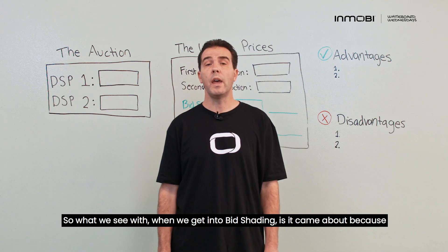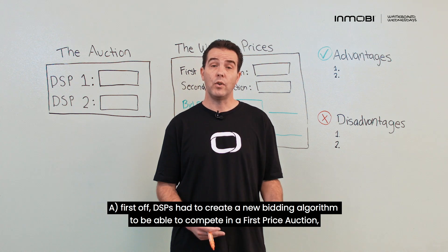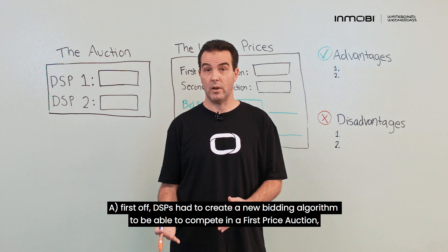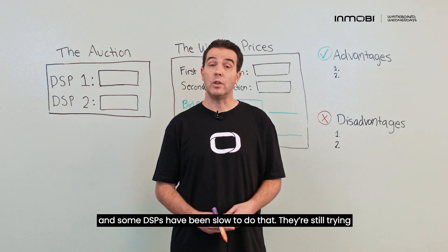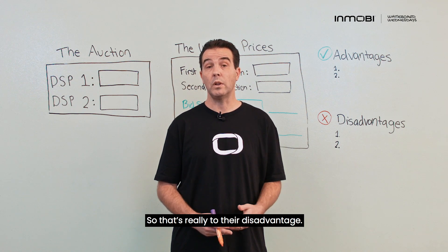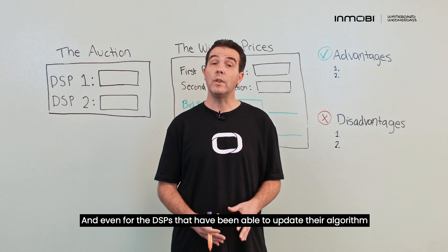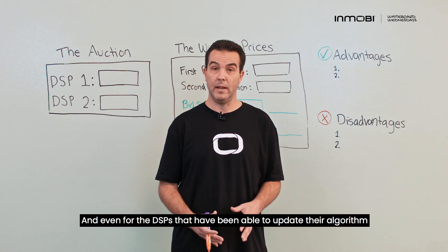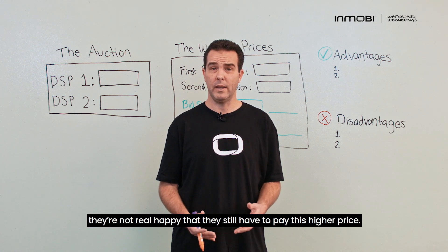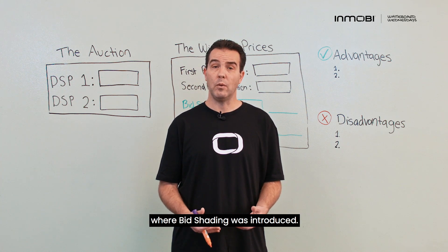Bid shading came about because, first off, DSPs had to create a new bidding algorithm to compete in a first price auction, and some DSPs have been slow to do that. They're still trying to use a second price bidding algorithm in a first price auction, which is really to their disadvantage — they end up paying higher than they would have to. Even for DSPs that have updated to a first price bidding algorithm, they're not happy that they still have to pay this higher price. So this compromise came about where bid shading was introduced.